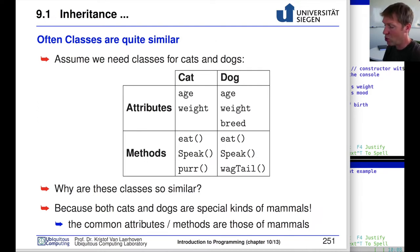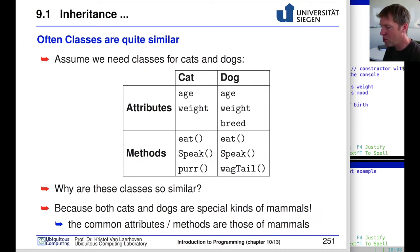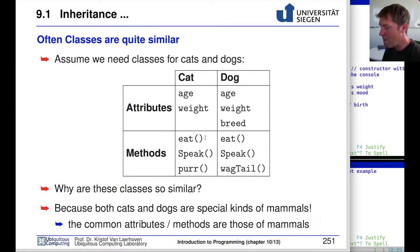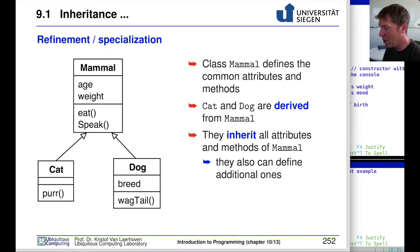Some duplication might be acceptable — cats and dogs speak differently or have differences — but it would make sense to factor out what is common to both. The reason these two classes are so similar is that both cats and dogs are animals, or more specifically mammals. All the things they share could be placed in a separate class called mammal. This is exactly the core concept of inheritance.